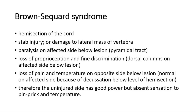Next is Brown-Séquard syndrome, which is hemisection of the cord involving either the right or left side of the cord. It can be caused by stab injury or damage to the lateral mass of the vertebra. There will be paralysis on the affected side below the lesion due to the pyramidal tract, and loss of proprioception and fine discrimination due to dorsal columns on the affected side below the lesion. Loss of pain and temperature on the opposite side below the lesion — it is normal on the affected side because of decussation below the level of hemisection. Therefore the uninjured side has good power but absent sensation to pinprick and temperature.